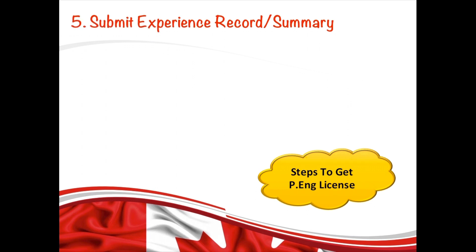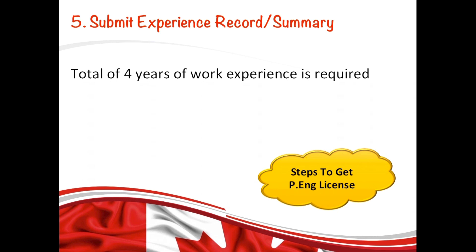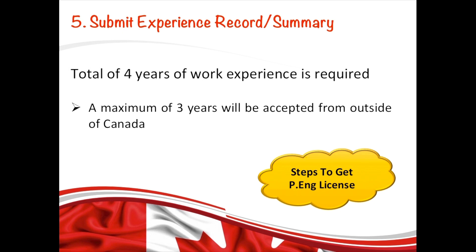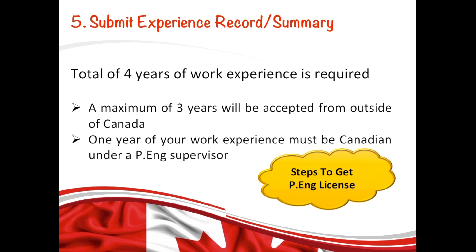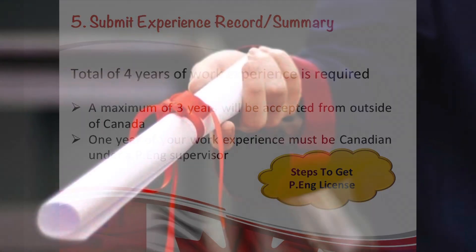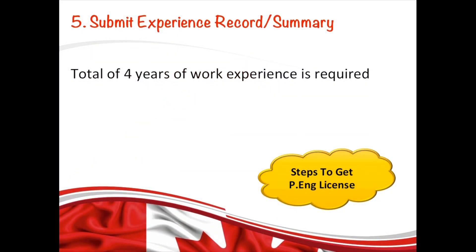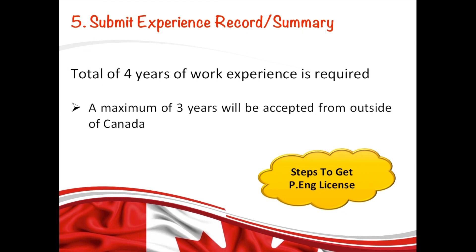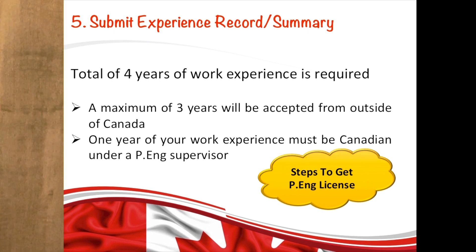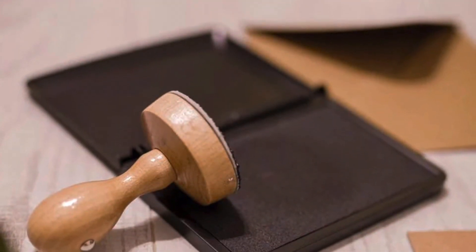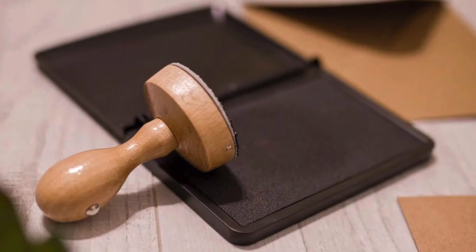Once you pass your PPE exam, the next step is to submit your experience summary. The total work experience required to get your PE license is four years. Up to three years of experience from outside Canada is acceptable, but you must have at least one year of Canadian work experience under the supervision of a professional engineer. If you have a master's degree from an accredited Canadian university, it counts as 12 months toward your 48-month work experience requirement. After meeting all five stages, you receive your PE license and a stamp or seal to approve drawings.